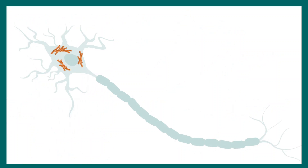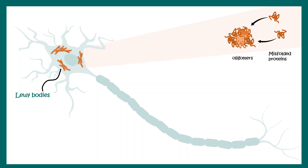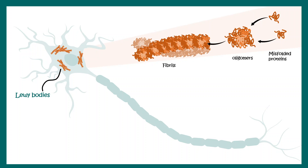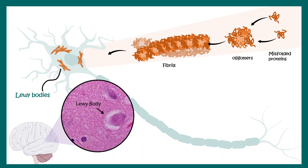Lewy body formation initiates with unfolded or misfolded alpha-synuclein protein. This alpha-synuclein protein forms oligomers. These oligomers combine with each other to form fibrils, and these fibrils associate with each other to form Lewy body-like formations. The intracellular Lewy body is a characteristic feature of Parkinson's disease and can be visualized from post-mortem brains as well.